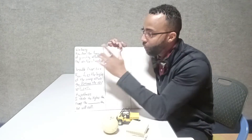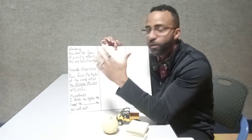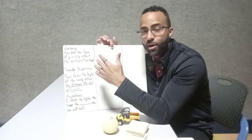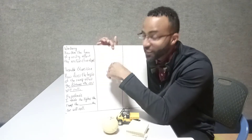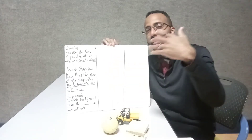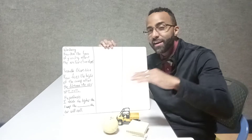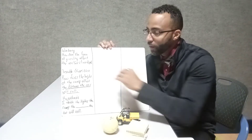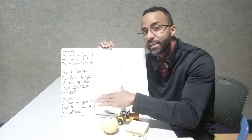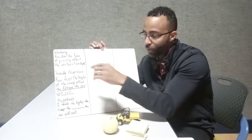Let's recap and review. What do we have so far? We have a wondering — something that we're going off of. We're wondering, how does the force of gravity affect the motion of an object? We have successfully created a testable question, something that we can test via an investigation. How does blank affect blank? We're going to look at how does the height of a ramp affect the distance that a car will roll.